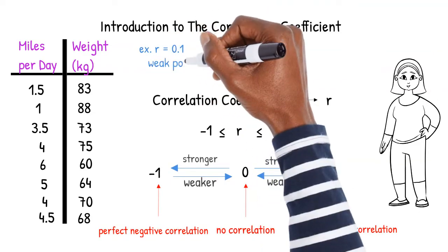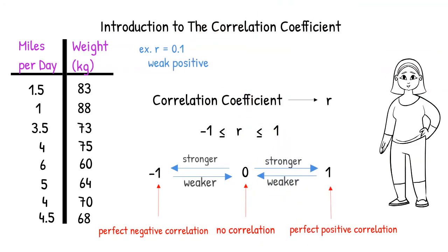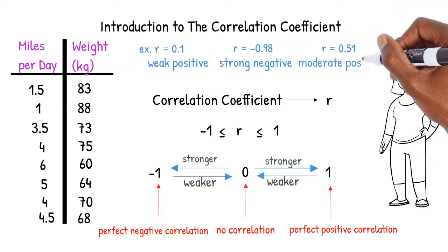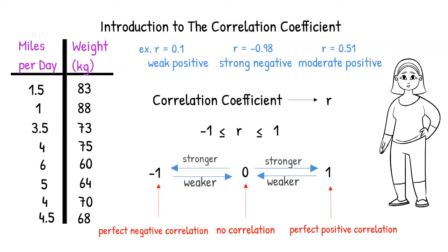So for example, if r is 0.1, there is a weak positive correlation. If r is negative 0.98, there is a strong negative correlation. And if r is equal to 0.51, there is a moderate positive correlation.